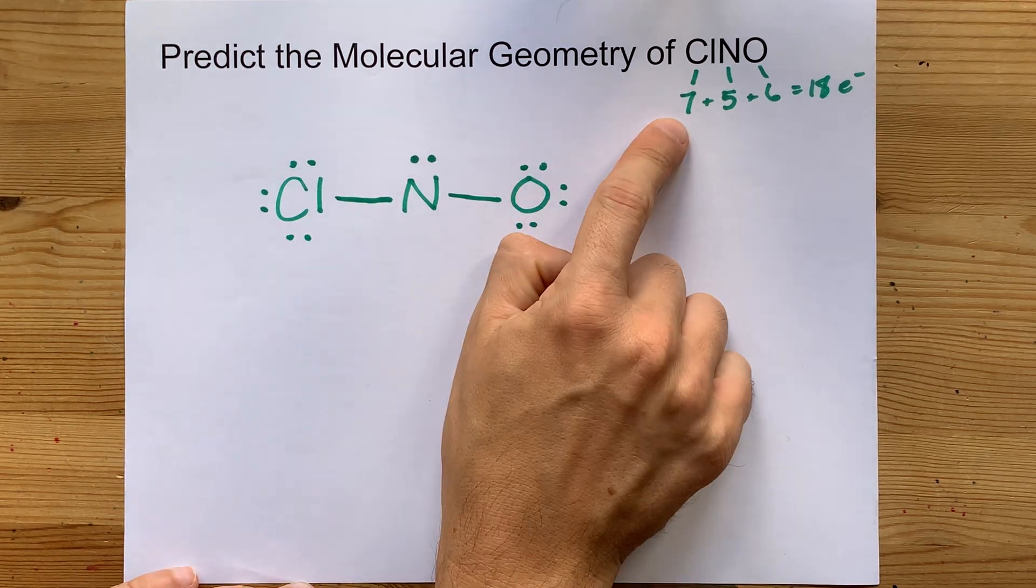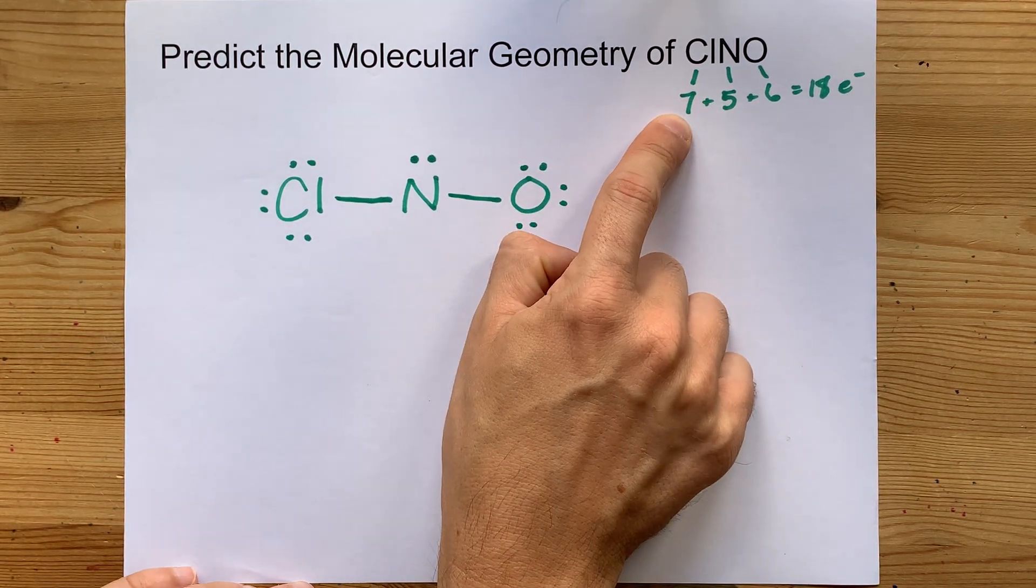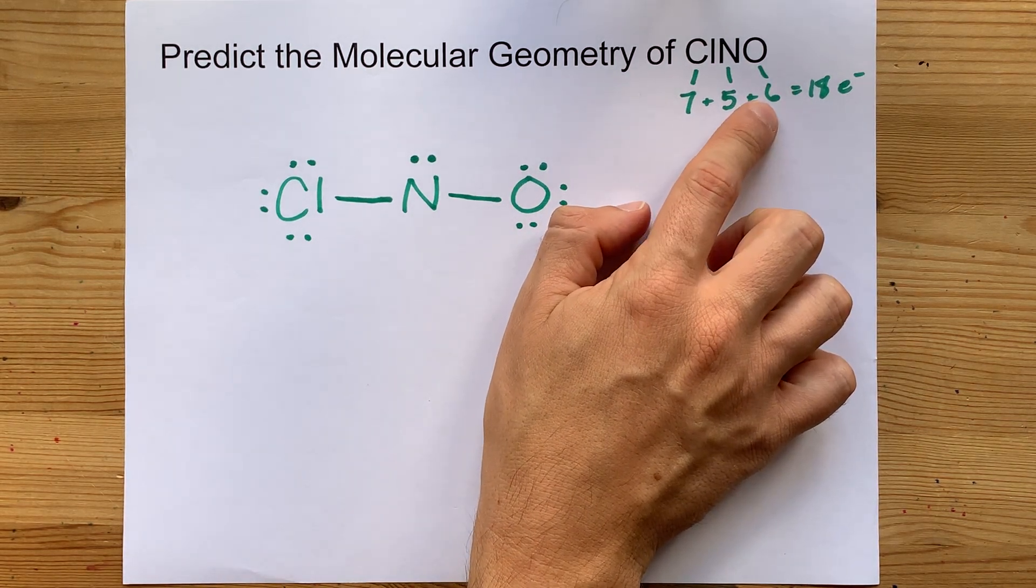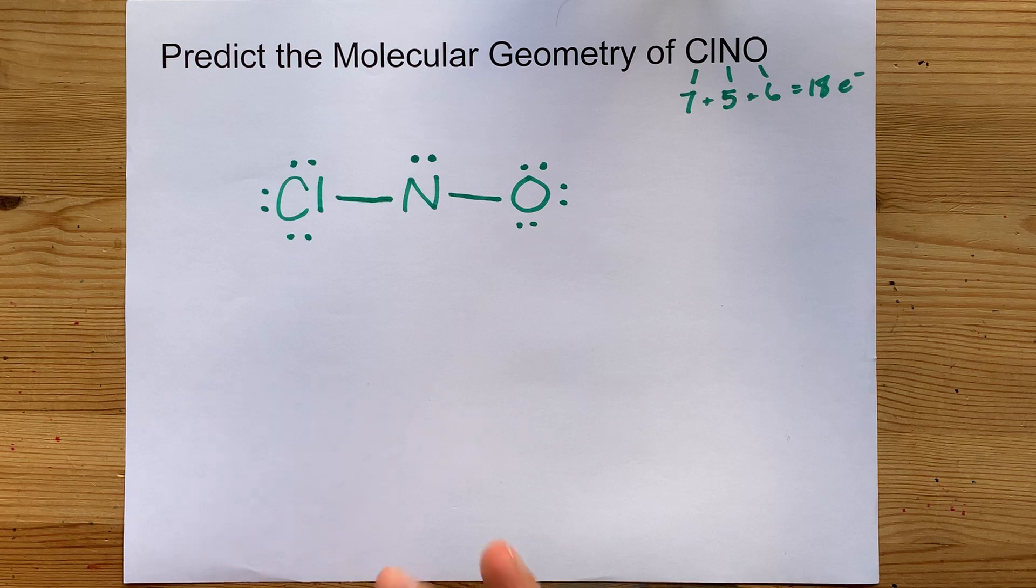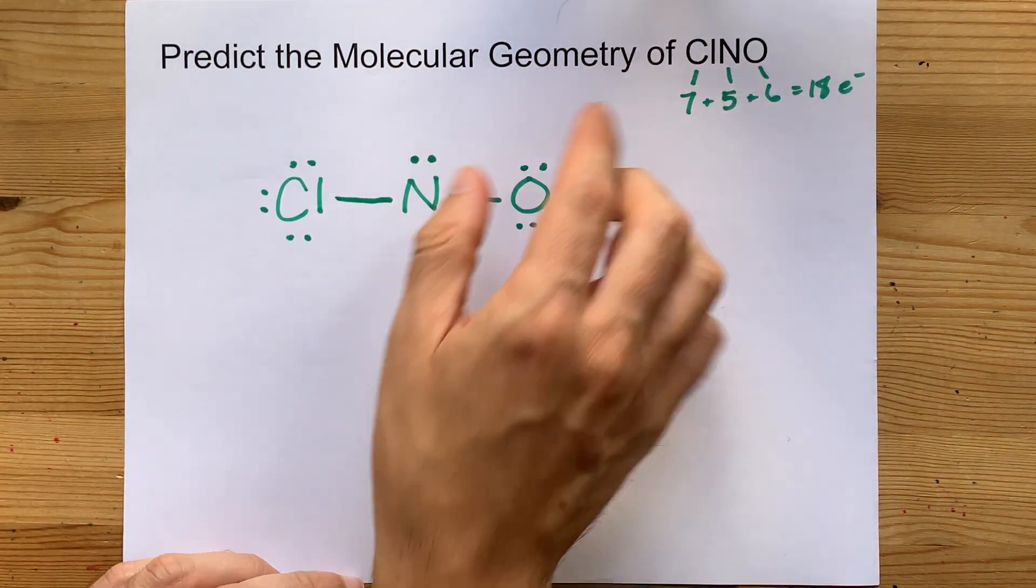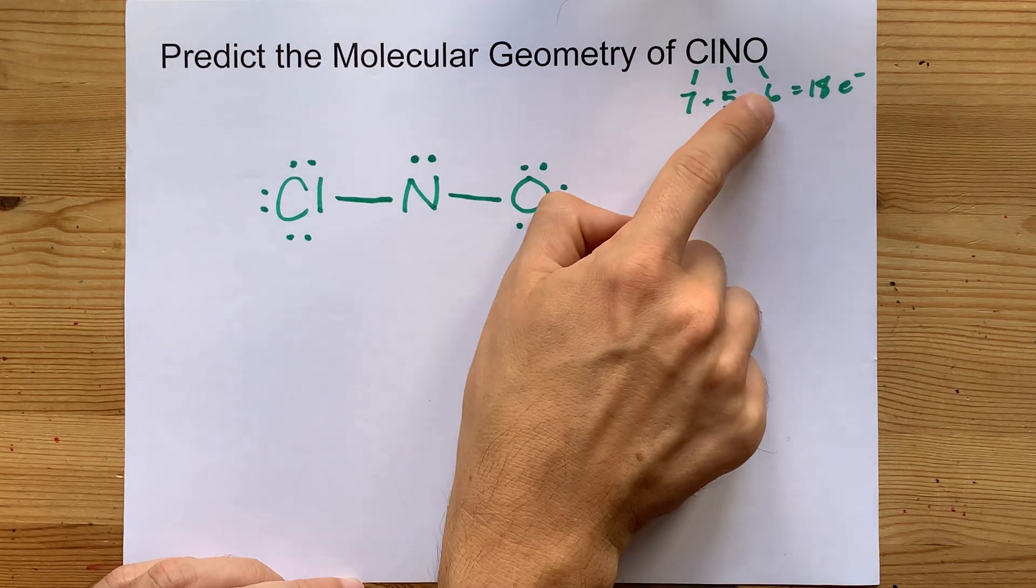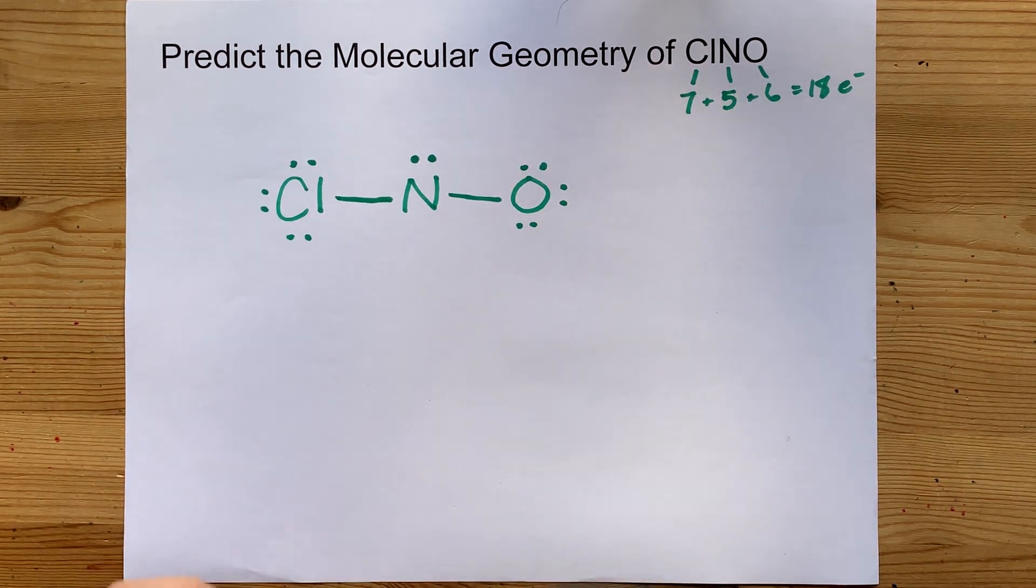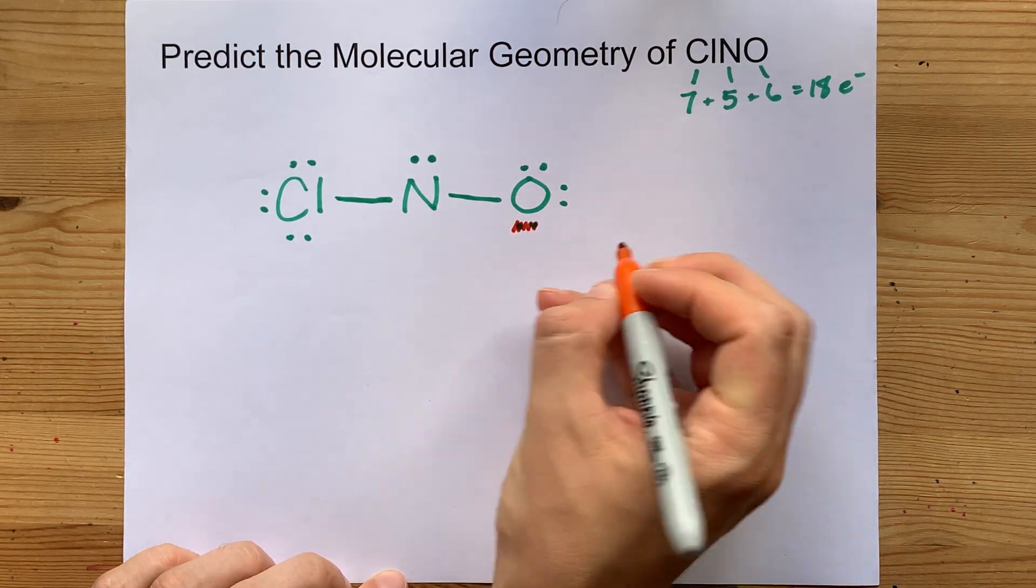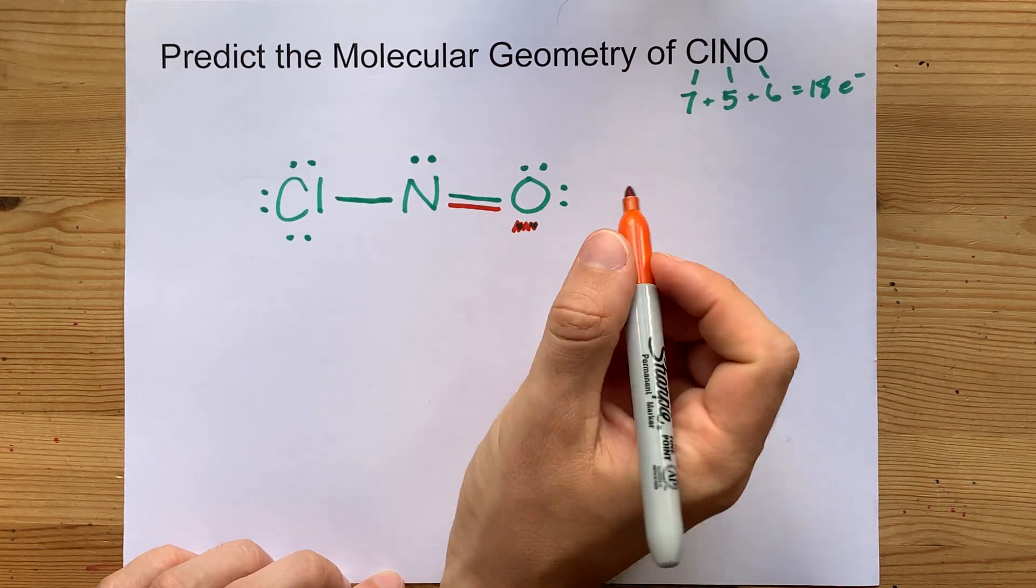Chlorine in group 17 only needs 1 extra electron to be stable. Oxygen would prefer to have gained 2 to be stable. I want to point out that chlorine likes making single bonds, and oxygen can make double bonds because it's 2 electrons short of its full octet. So I think we should take those electrons from oxygen and make it a double bond here.